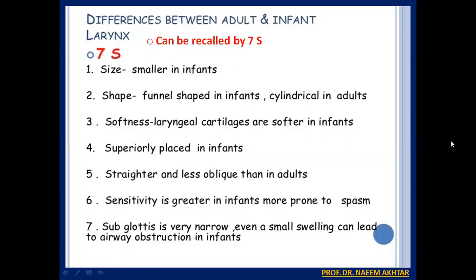We can recall the differences between adult and infant larynx by the 7S mnemonic: Size (smaller in infants), Shape (funnel-shaped in infants, cylindrical in adults), Softness (laryngeal cartilages are softer in infants), Superiorly placed (larynx is higher in infants), Stature (shorter and less rigid than in adults), Sensitivity (greater in infants and more prone to spasm — because the infant larynx is more sensitive), and Subglottis (very narrow, so even a small swelling can lead to airway obstruction in infants).